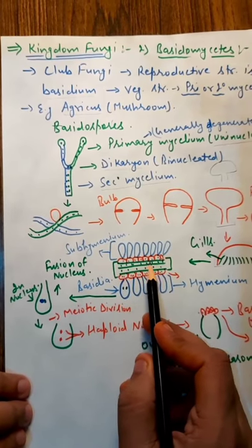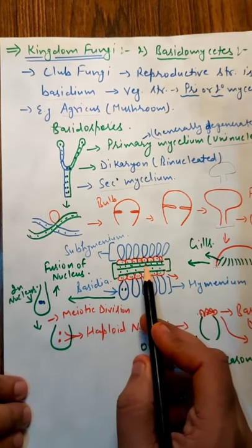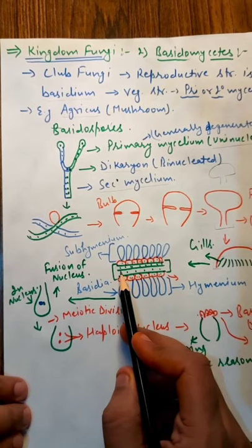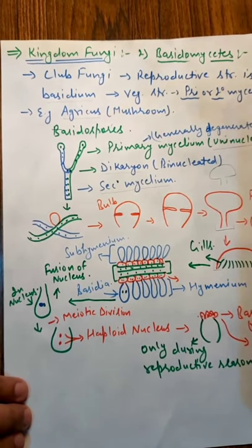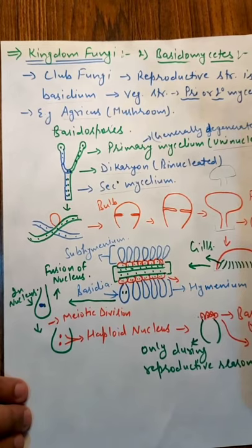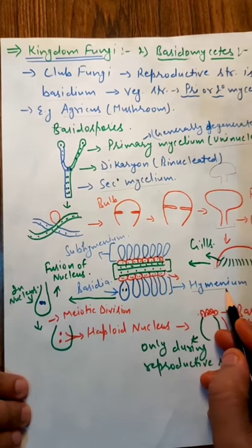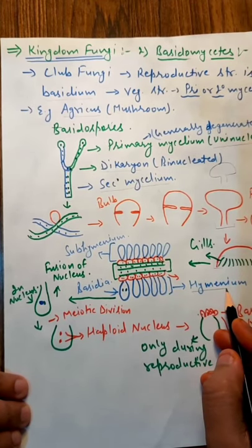Now the gill has been studied here in more detail. Here, this type of nucleus-containing mycelium or membranes are present, which I've shown in green color. On its sides, there are red-colored cells present on both sides. These are called hymenium.